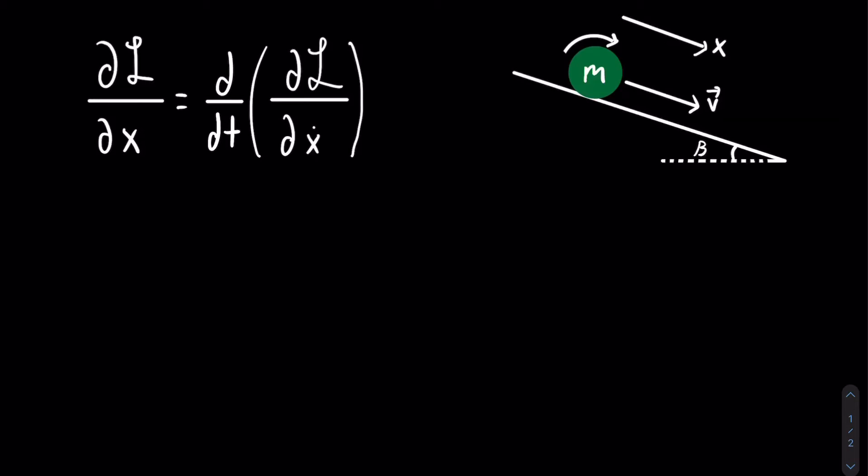So now, we will be using the Lagrangian to find the equation of motion for a rolling ball. The equation is at the top, and like usual, we start with the kinetic energy.